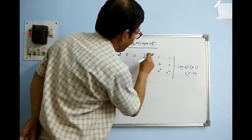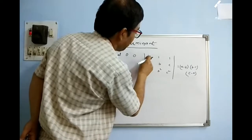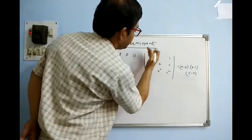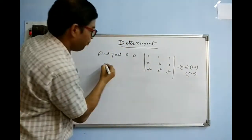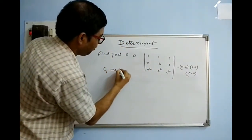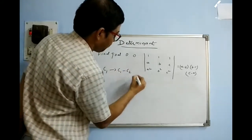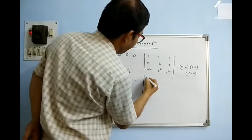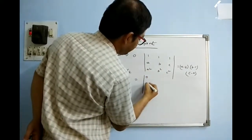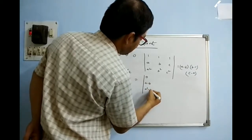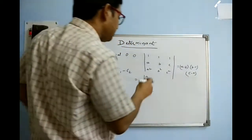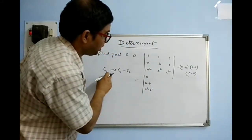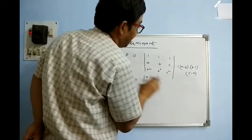Performing the operation at C1: C1 minus C2. This gives 0, a−b, a²−b² in column 1. The change takes place at C1 only; C2 and C3 remain as they are. Don't get confused — 1,1,1 is in R1, but if we do R1 minus R2 we get 1−a, 1−b, 1−c which is not useful. C2 is unaltered, so we can make changes in C2 as well.